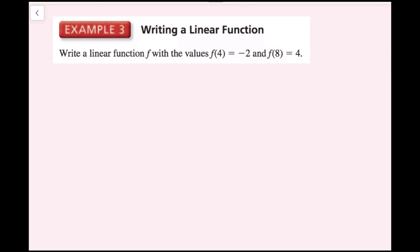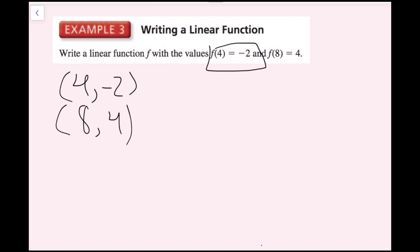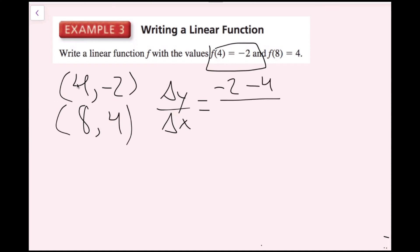Write a linear function f with values f(4) equals negative 2 and f(8) equals 4. Remember, these function values correspond to ordered pairs: (4, -2) and (8, 4). First, I need to find the slope: change in y over change in x, which is y2 minus y1 over x2 minus x1. I'll call (4, -2) point 1 and (8, 4) point 2. So: negative 2 minus 4 over 4 minus 8 gives negative 6 over negative 4, which simplifies to 3/2.